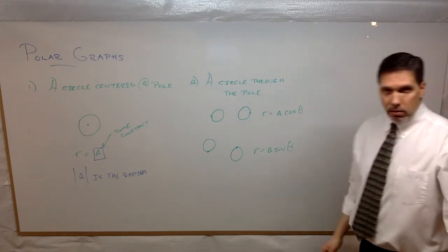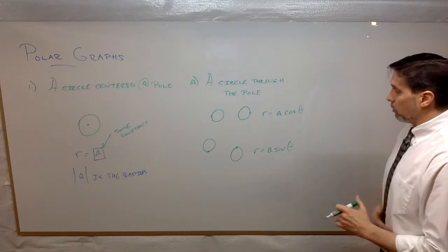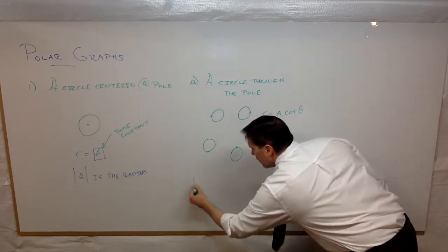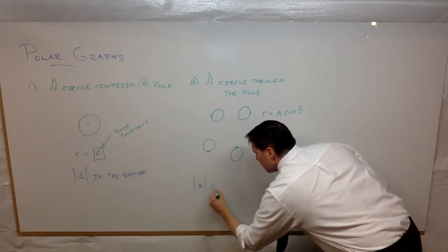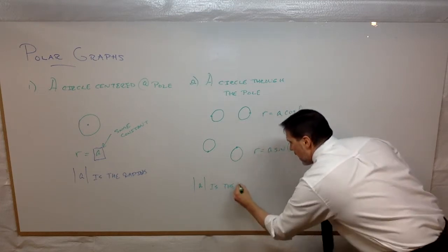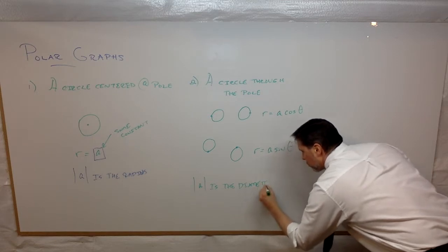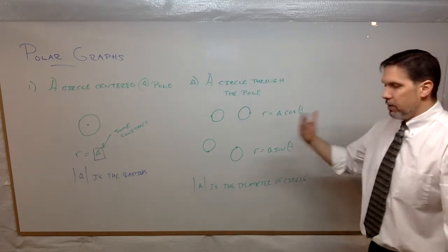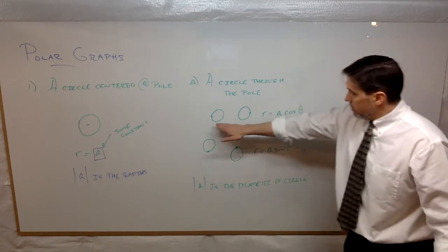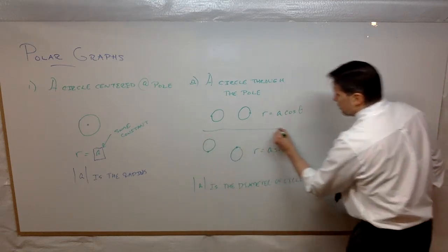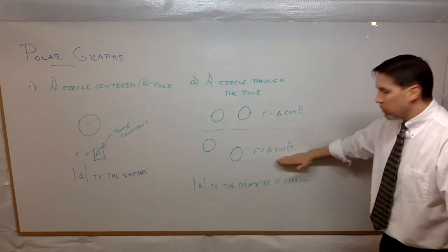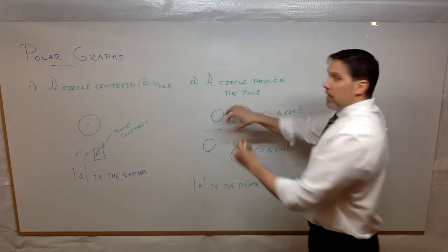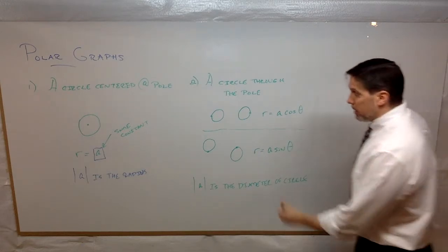Where a is some non-zero constant again. Now, what we can say, some things before we go to graph this, and we'll see here in a moment. This absolute value of a, let's put it down here. Absolute value of a is not the radius this time, it's the diameter. It's the diameter of the circle. So, take the absolute value of a, that will be the diameter of the circle. Now, these two pictures, left and right, like I said, I really should separate these. This is r equals a cosine of theta, r equals a sine of theta. They have the same format, one's cosine, one's sine. The cosines go to the right and to the left, depending on what a is, positive or negative.